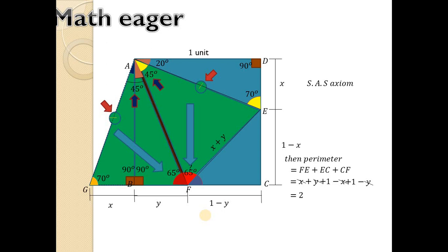This congruency method also solves the problem, and it is quite shorter than the trigonometrical method, because the trigonometrical method is more lengthy and the trigonometrical simplification part is much harder. In the congruency method, the harder part is just the construction.